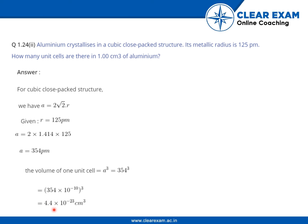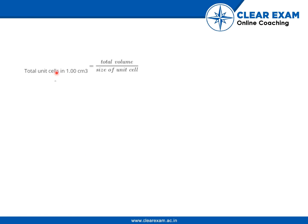So we get 4.4 times 10 to the power minus 23 centimeter cube. Total number of unit cells in one centimeter cube is equal to total volume by size of unit cell, so 1 by 4.4 times 10 to the power minus 23 centimeter cube.